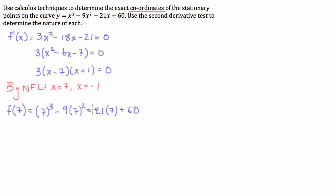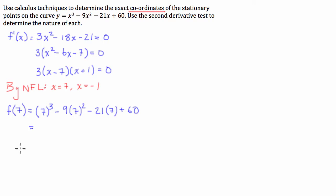I always write this step out in an exam even under time pressure, because this is where I make a lot of my mistakes. It's a good idea to slow down at the parts of a question where you tend to go wrong. Working through the arithmetic, f(7) comes out as negative 185. Now we also find the function at the other turning point, x equals negative 1.